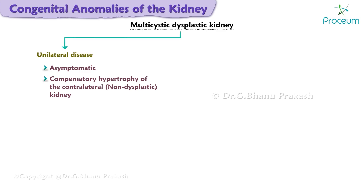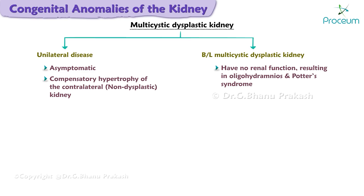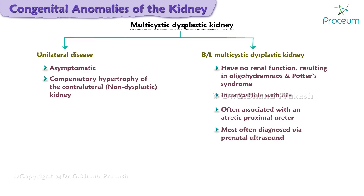Most patients with multi-cystic dysplastic kidney have unilateral disease, which is asymptomatic; they have compensatory hypertrophy of the contralateral kidney. Patients with bilateral multi-cystic dysplastic kidneys have no renal function, resulting in oligohydramnios and Potter's syndrome — bilateral multi-cystic dysplastic kidney disease is incompatible with life. Multi-cystic dysplastic kidney is often associated with an atretic proximal ureter and is most often diagnosed via prenatal ultrasound.